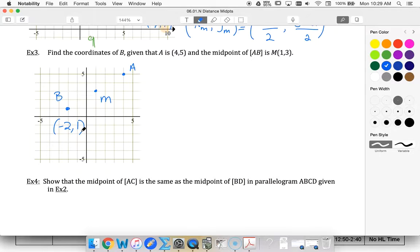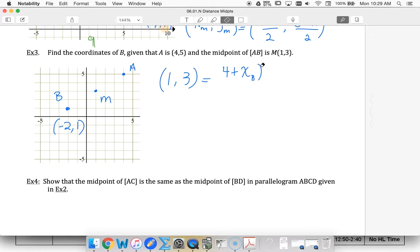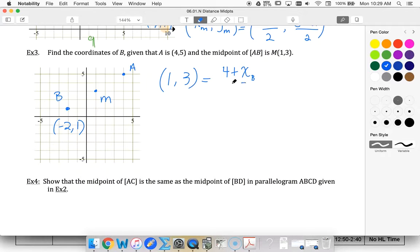Or I could use my formula. So my midpoint (1, 3) is going to be (4 plus the x value of point B) divided by 2, and (5 plus the y value of point B) divided by 2.